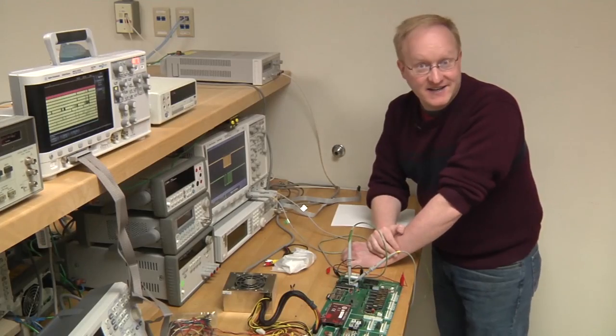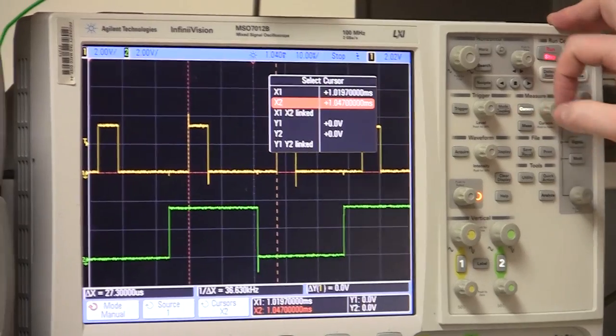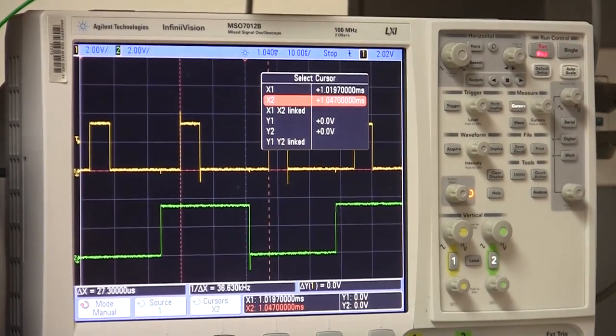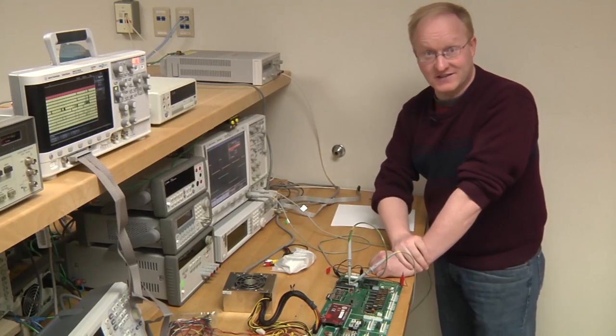One millisecond per division. So this operation is taking two milliseconds. That's an eternity on a microcontroller. But the moral of the story is the I squared C EEPROM is pretty slow, and it took a scope to tell us that.